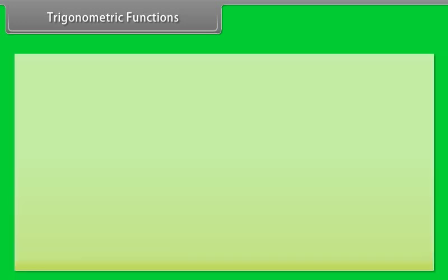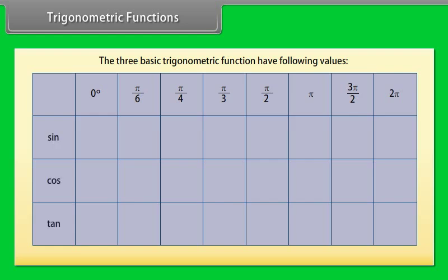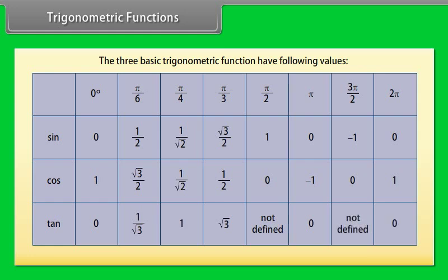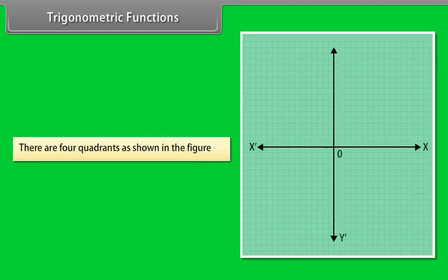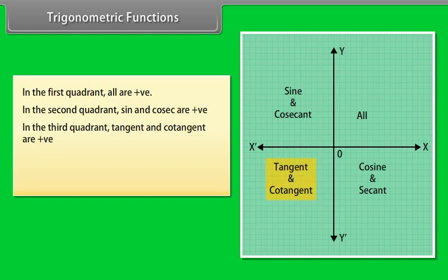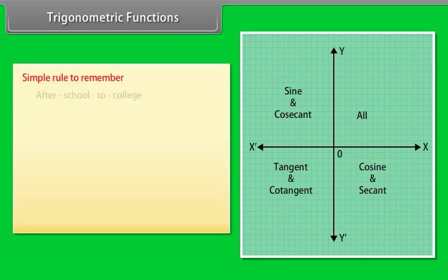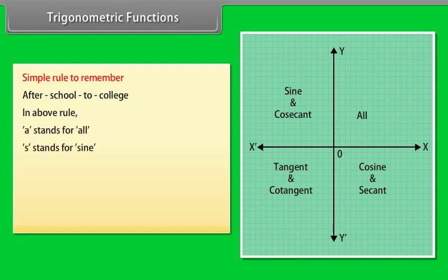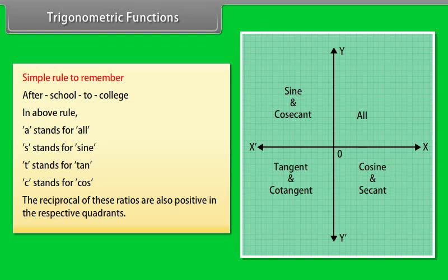The three basic trigonometric functions have specific values at standard angles. There are four quadrants: in the first quadrant all ratios are positive; in the second quadrant sine and cosec are positive; in the third quadrant tangent and cotangent are positive; in the fourth quadrant cosine and sec are positive. A simple rule to remember this is 'After School To College,' where A = all, S = sine, T = tan, C = cos. The reciprocals of these ratios are also positive in the respective quadrants.